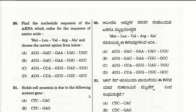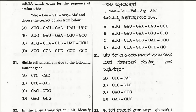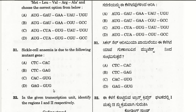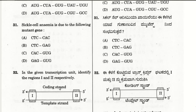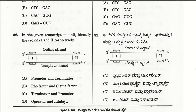The thirty-first question: sickle cell anemia is due to the mutant gene. Both CTC→CAC (DNA) and GAG→GUG (mRNA) are possible representations, so both A and D are correct. The thirty-second question: in a given transcription unit, identify regions 1 and 2 — region 1 represents the terminator and region 2 represents the promoter region.